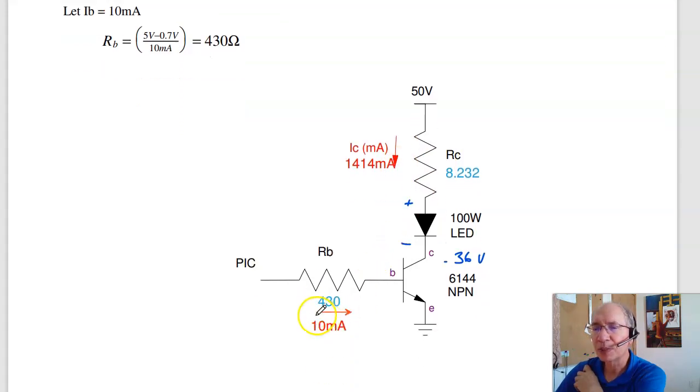To find RB, take this current divided by beta, divided by 200, you get 7 milliamps. So pick something bigger than 7, less than 25, because all I pick and do is 25 milliamps. I chose 10 milliamps. And this is 5 volts, this is 0.7. Again, this is a diode. The drop across the silicon diode is 0.7. 4.3 volts at 10 milliamps is 430 ohms.